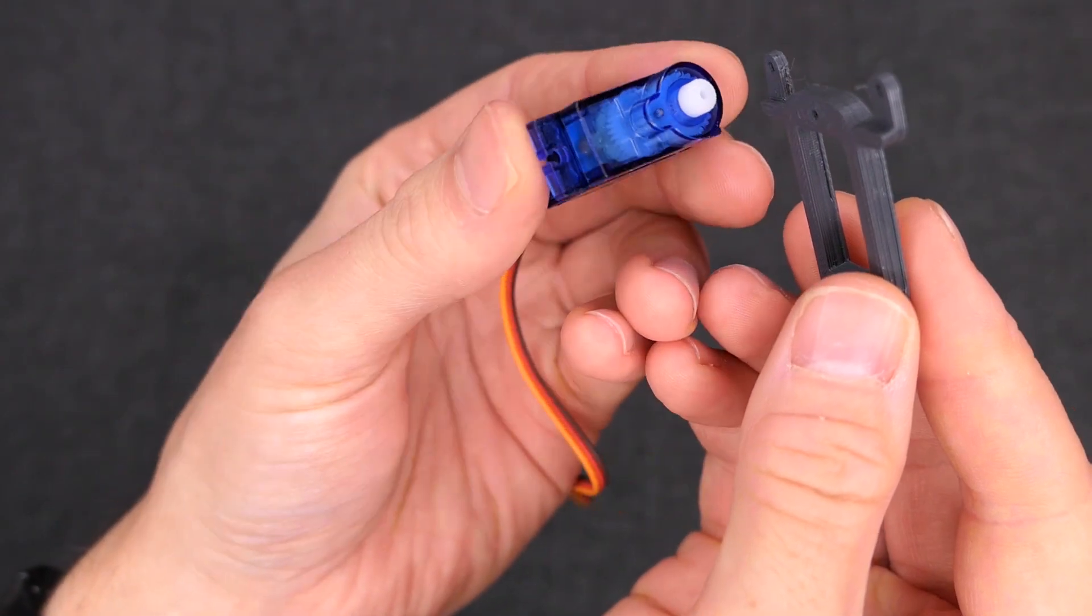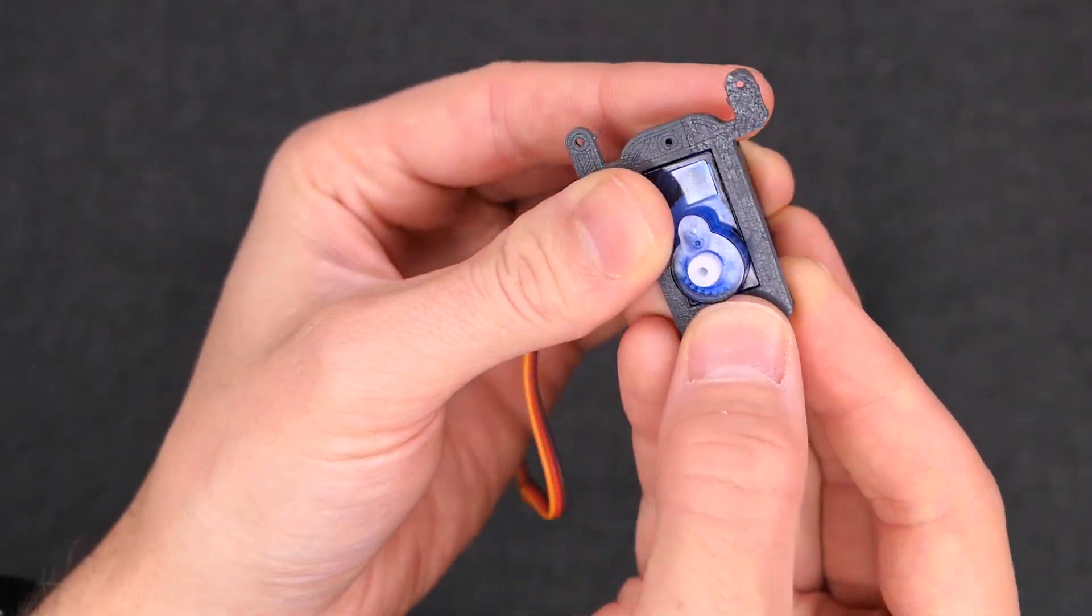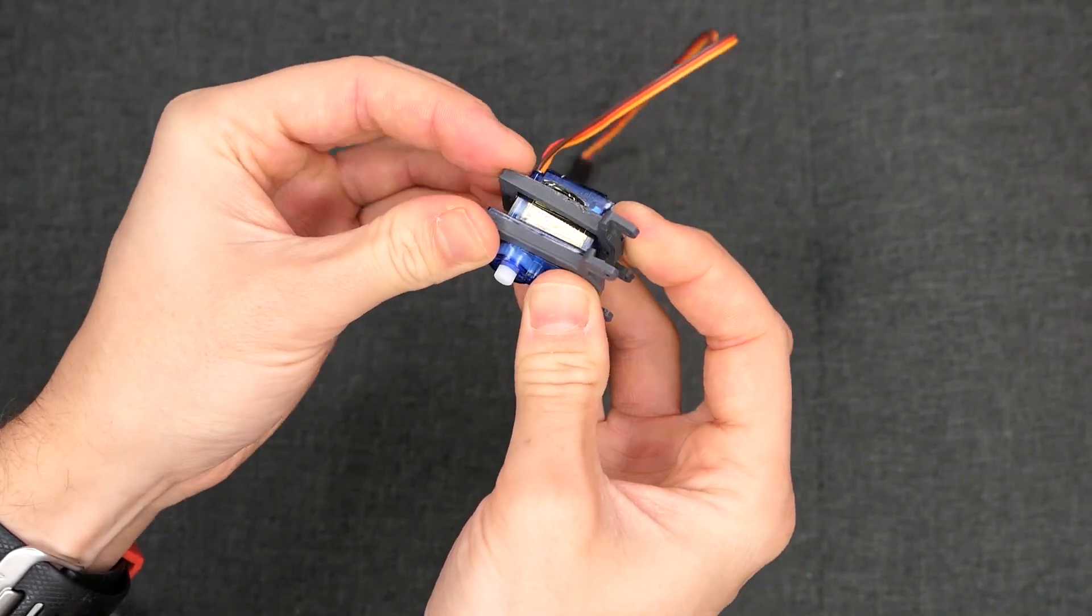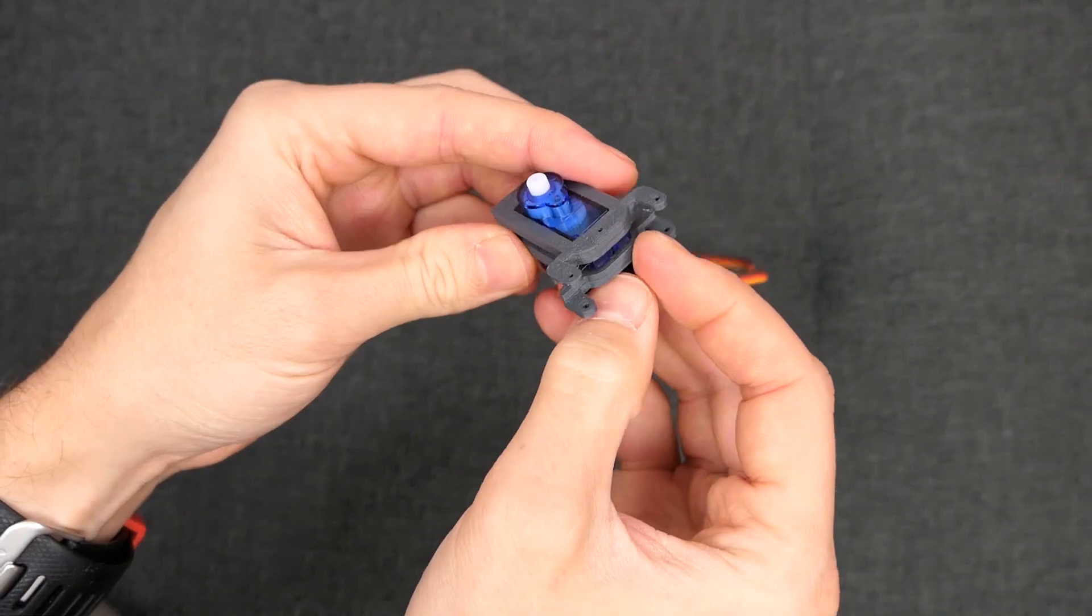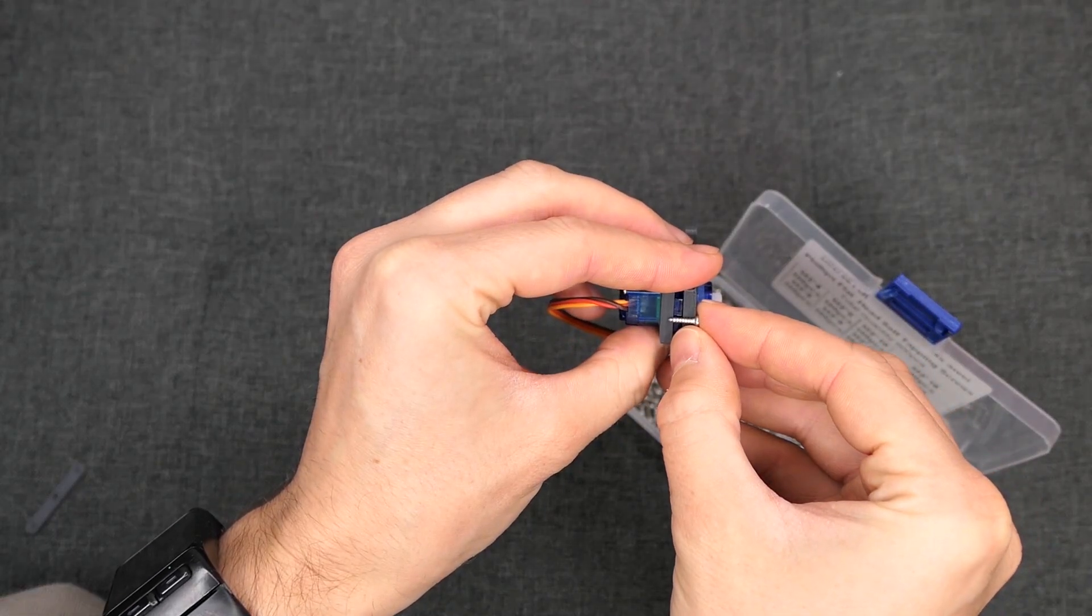Start by attaching the two brackets to the top and bottom of the servo. Ensure they are orientated with the thinnest part of the bracket at the top. Secure using an appropriate length M2 screw.